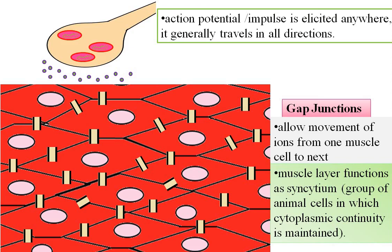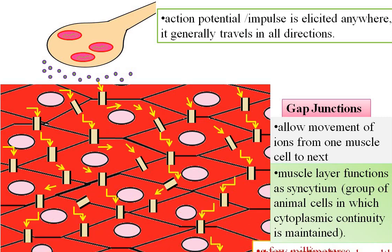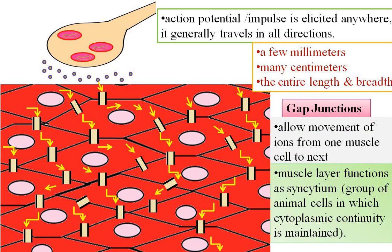When an action potential — that is, an impulse — is elicited anywhere within the muscle mass, it generally travels in all directions. The distance that it travels depends on the excitability of the muscle. Sometimes it travels only a few millimeters; at other times it travels many centimeters, or it may also travel the entire length and breadth of the muscle. Both longitudinal and circular smooth muscles are responsible for gastrointestinal motility.